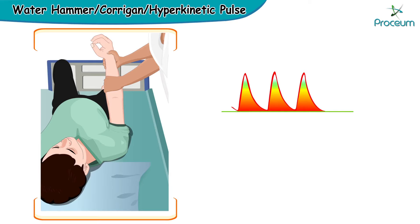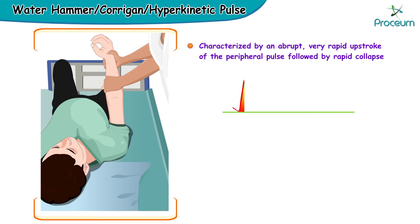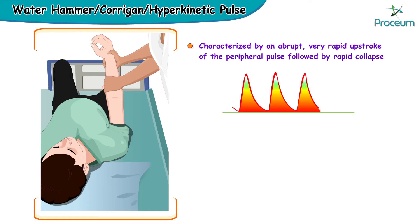The water hammer, or Corrigan, or hyperkinetic pulse is characterized by an abrupt, very rapid upstroke of the peripheral pulse, followed by rapid collapse.